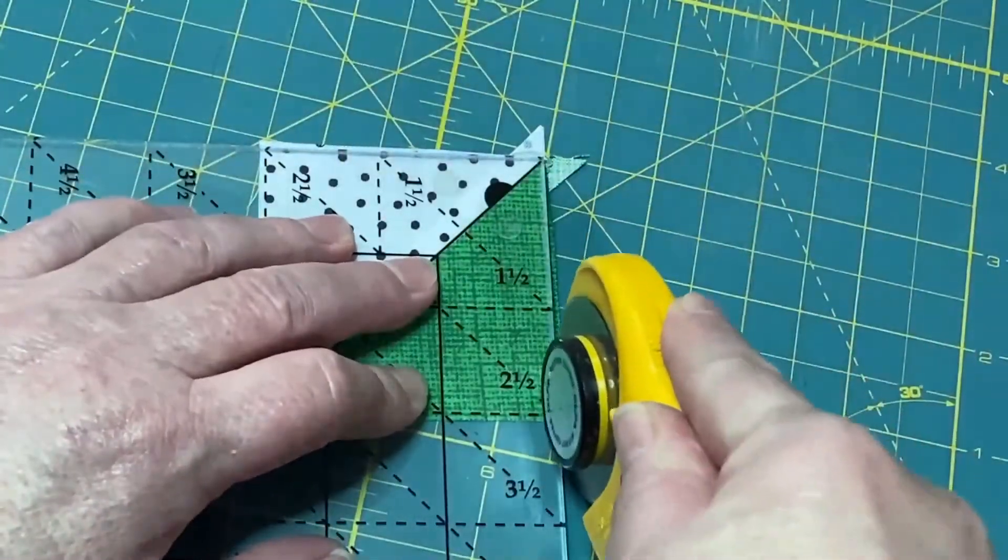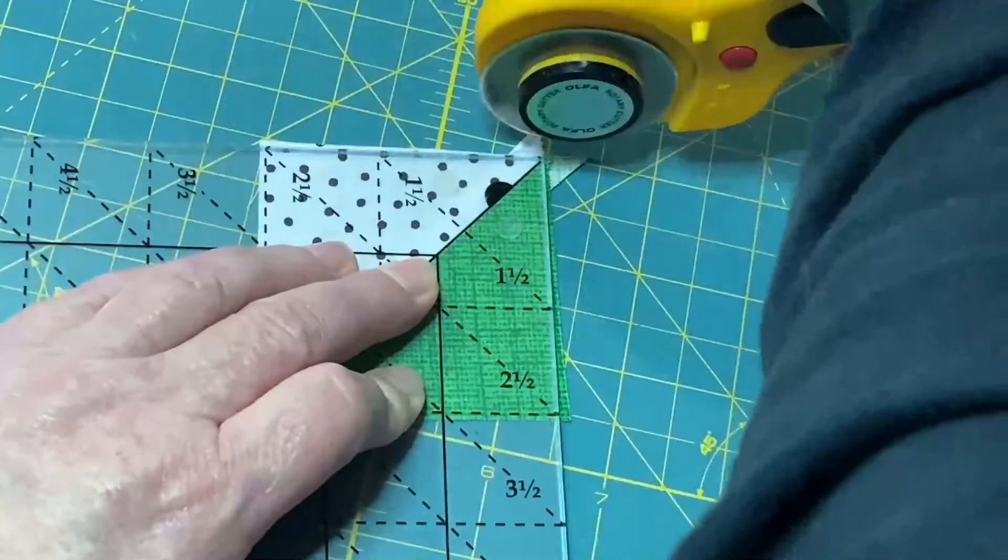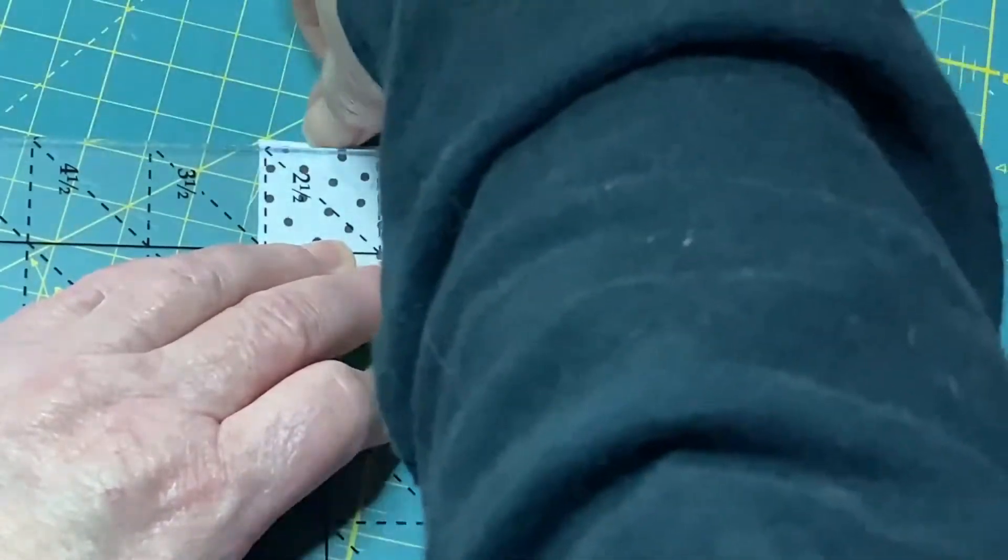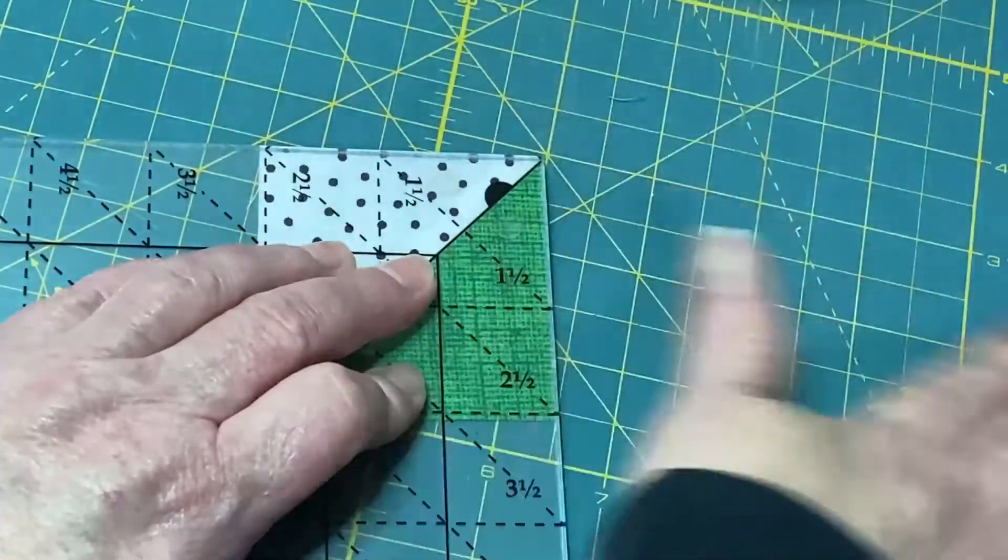Now, I'm going to trim with my rotary cutter up and across. I'm going to remove my trimmed edges.